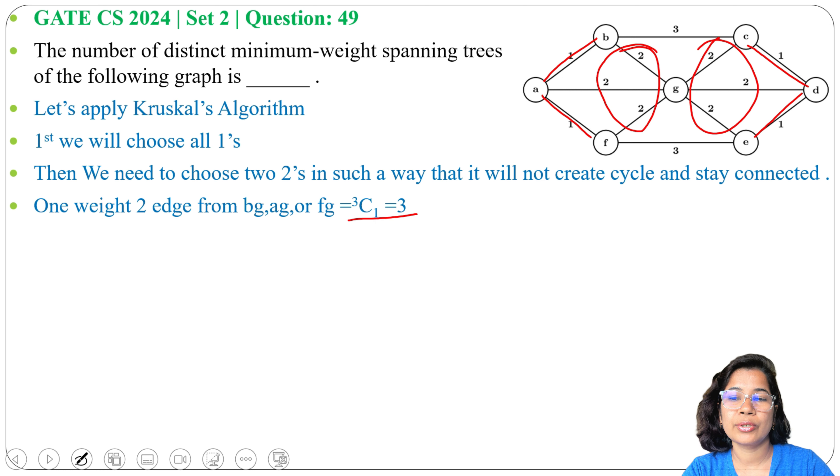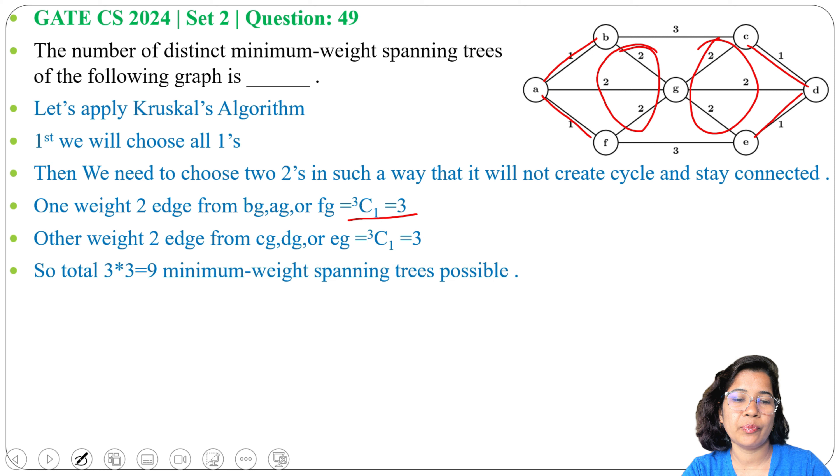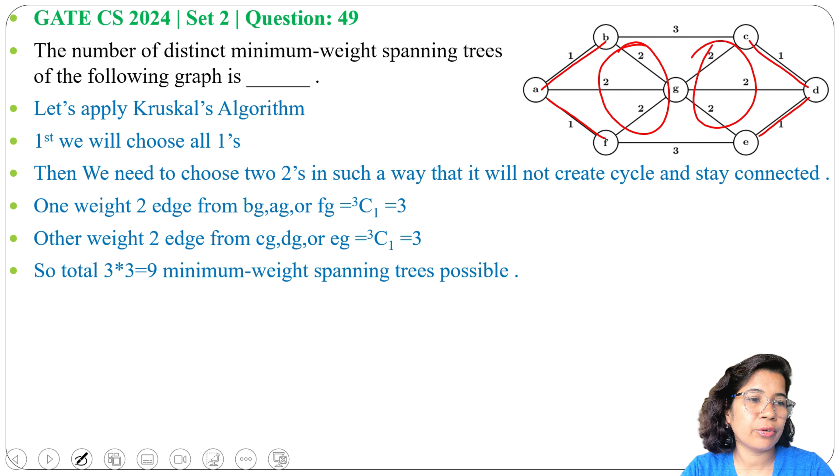Next, from CG, DG, and EG we'll choose one edge. We can do this in 3 ways - 3C1. From three edges we are choosing one edge, so total 3 multiplied by 3 equals 9 ways.